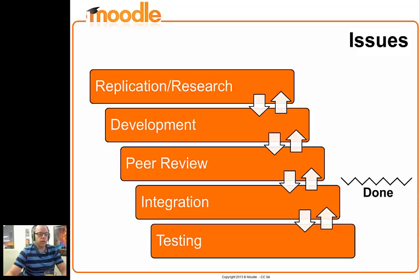The integration team goes through another review of the code. This is a very strict review and once that's done, it's integrated into a temporary integration version waiting for testing, and once tested it's approved and becomes a released change. As far as the team of developers is concerned, they have to mark a point where they consider their work done. We've defined this as when it moves on from development and peer review into integration — basically when the team hands it over to the integration team.